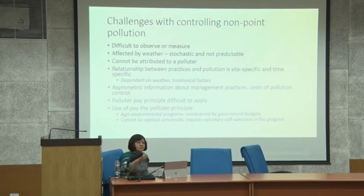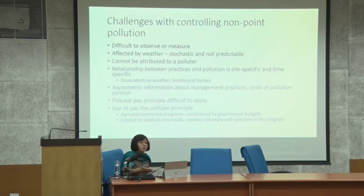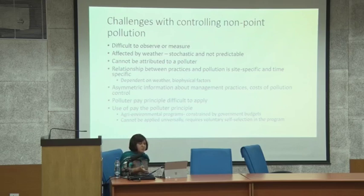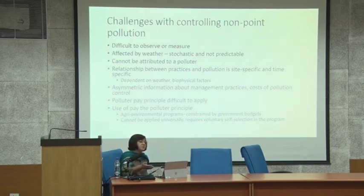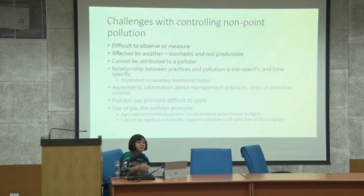The problem is site-specific, varying even within a single field. It also involves asymmetric information — regulators don't know what farmers are doing, and only farmers know the true cost to them of doing something differently. Any solution a regulator proposes will seem costly, and farmers will claim it reduces profits, with no way for the regulator to know otherwise. In most countries, including developed ones, farmers are not penalized for pollution — they are treated under a polluter-pays-in-reverse principle.